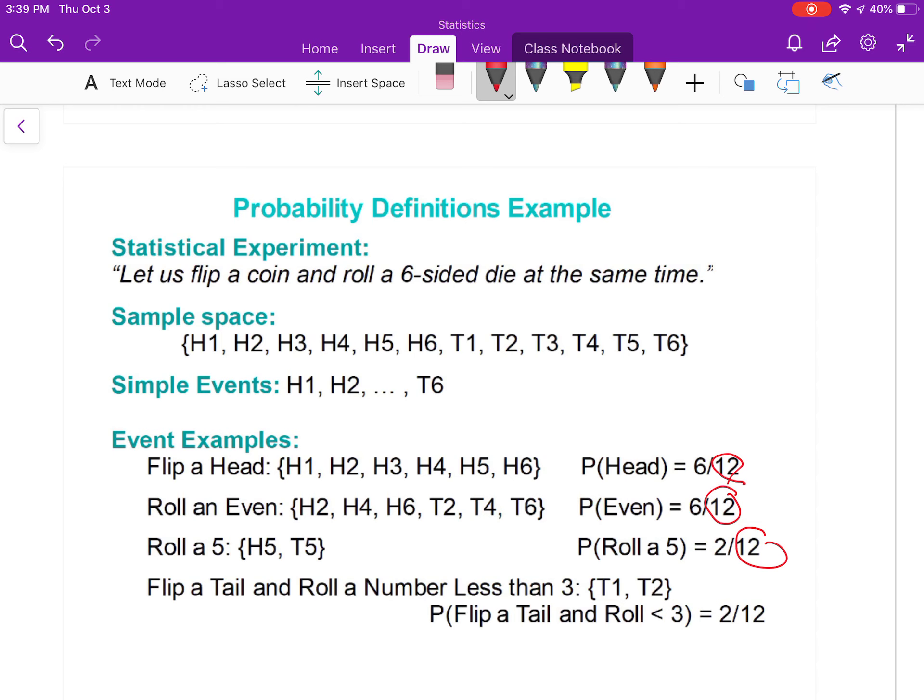The simple event would be that I actually roll it and get H1, heads with 1. Event examples: let's say I want to find the probability of flipping heads. Here are my possibilities for heads—there's 6 of them, so it's 6 out of 12 or 1/2. Rolling even numbers: heads with 2, heads with 4, heads with 6, also tails with 2, tails with 4, tails with 6. Those are 6 possibilities out of 12, so 1/2.